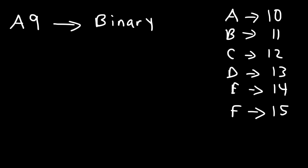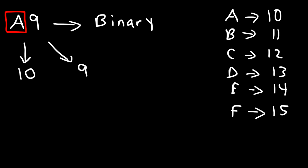So we can replace A with 10. Each number and letter in the hexadecimal system can be represented with a binary number in groups of 4. So A corresponds to 10, and we have a 9. How can we convert each of these numbers into a binary number?